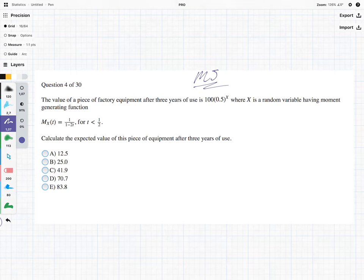the value of a piece of factory equipment after three years of use is 100 times 0.5 to the power of x, where x is a random variable having the moment generating function given over here. And it says,